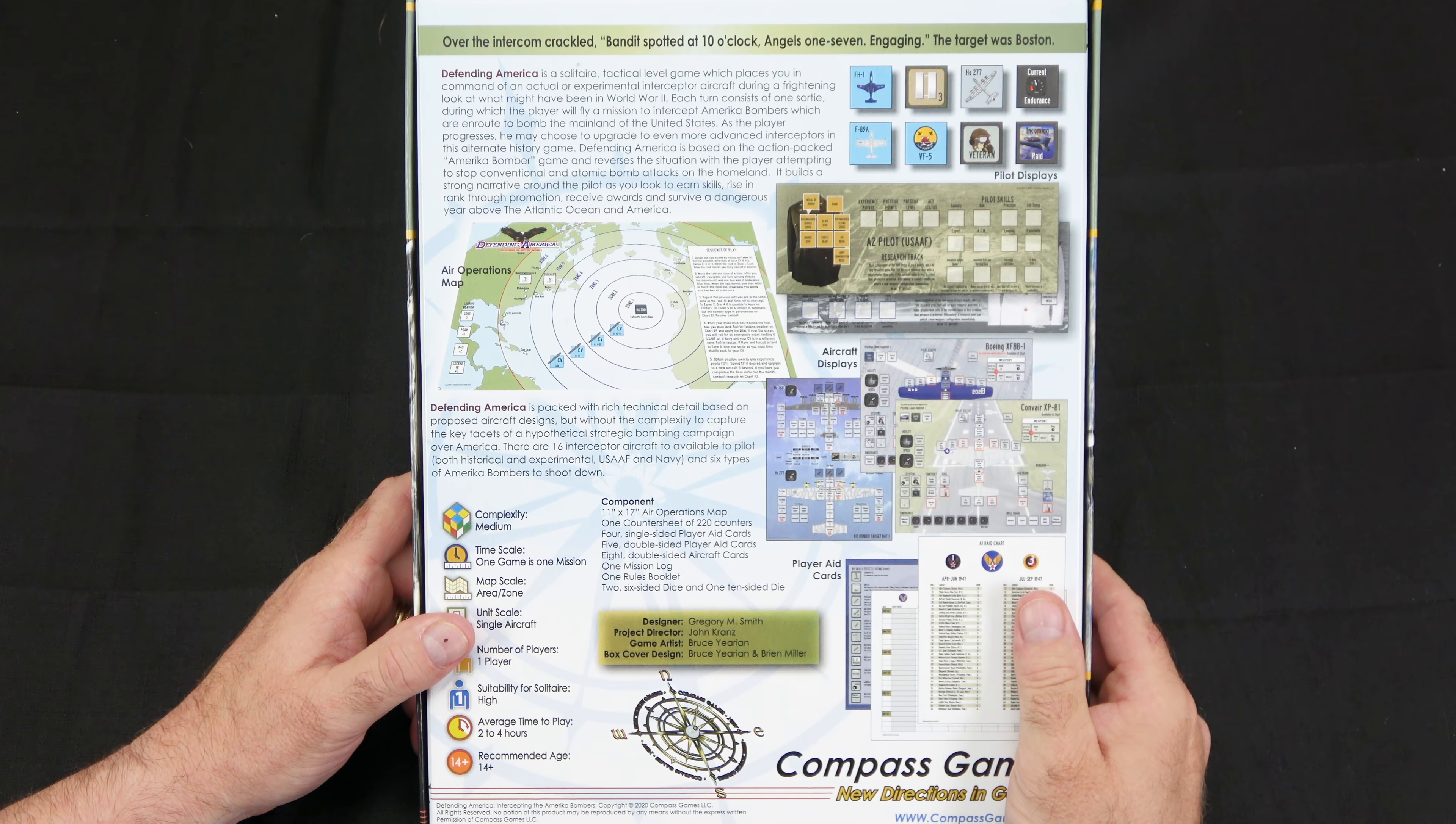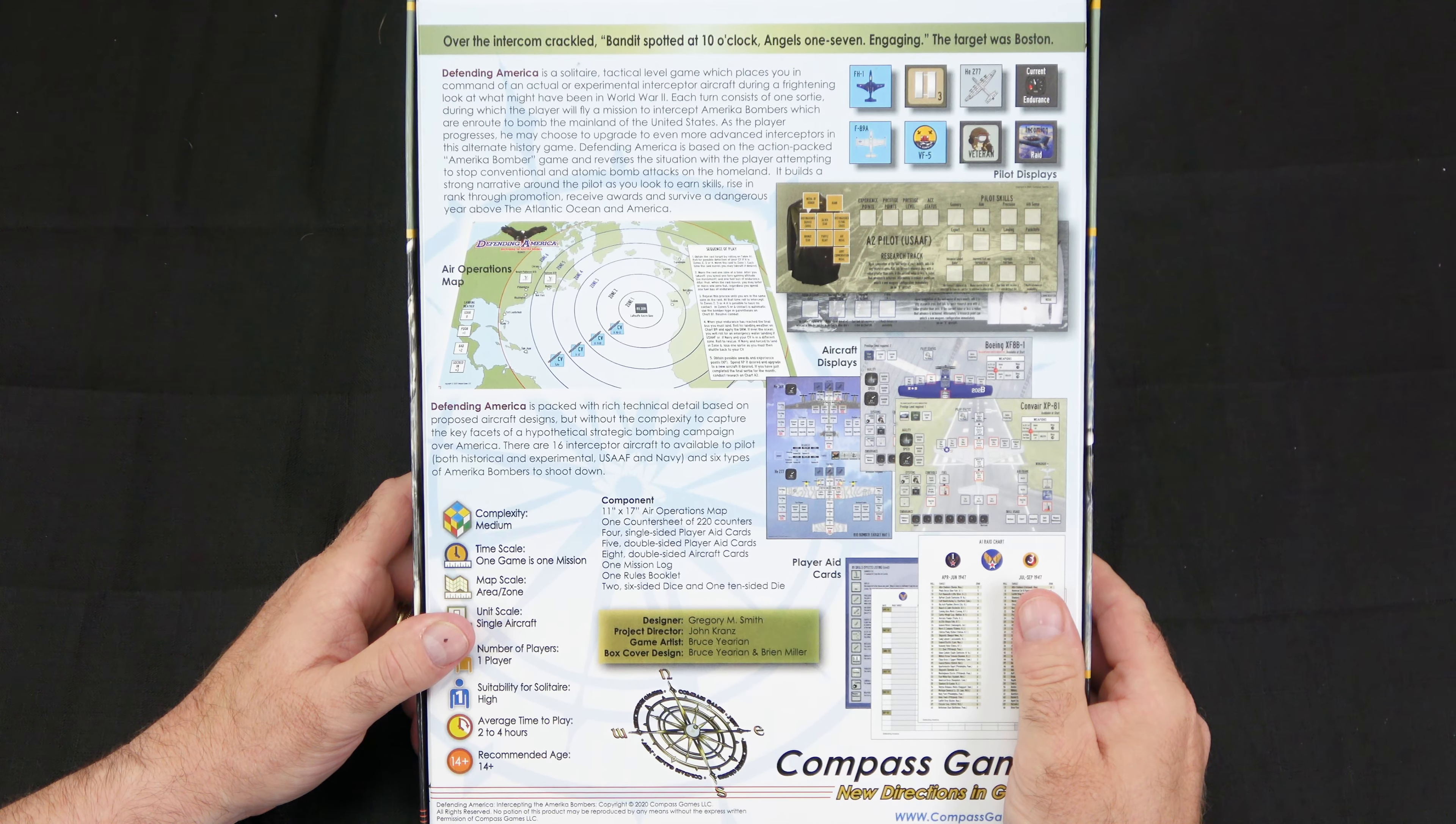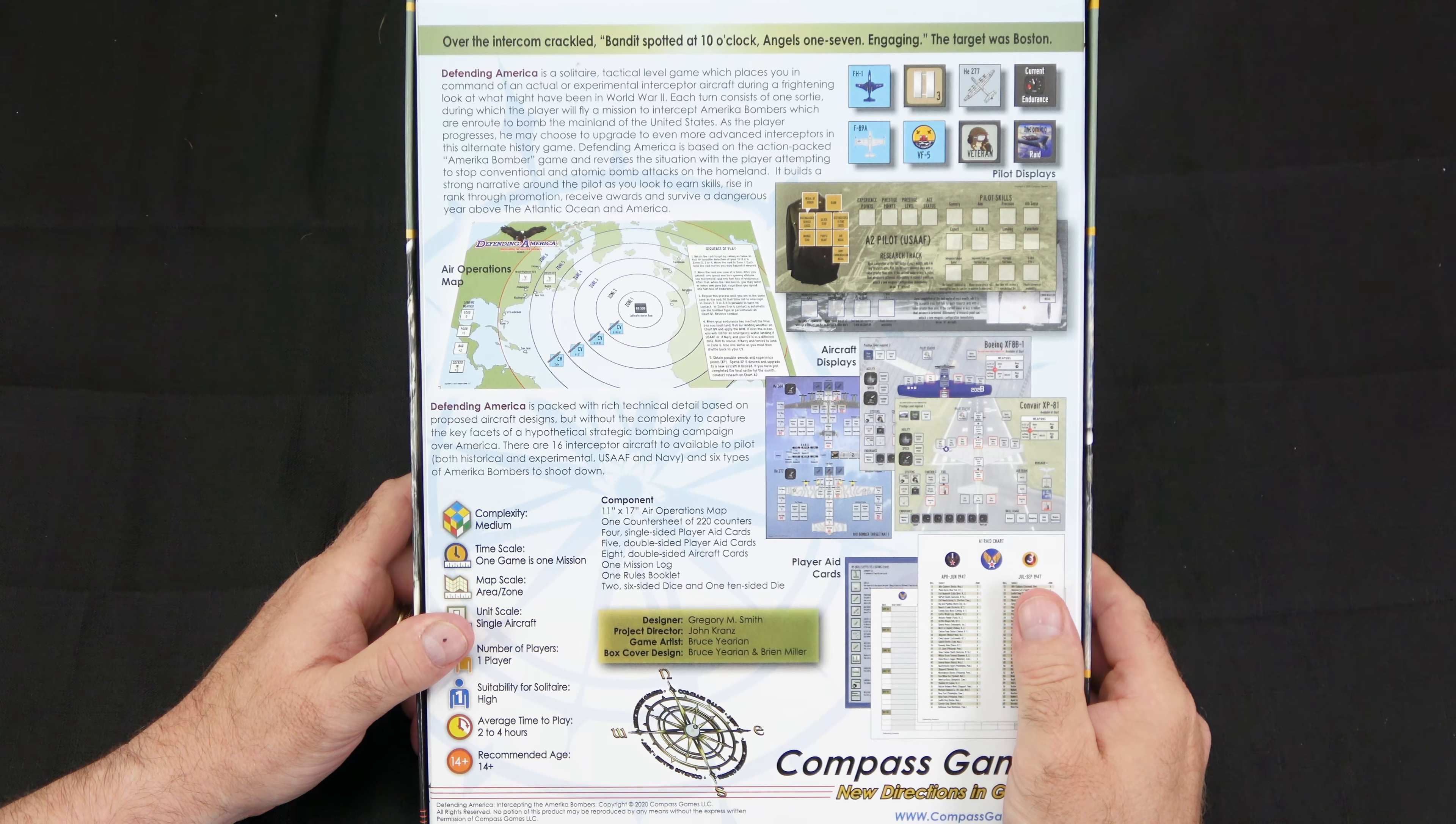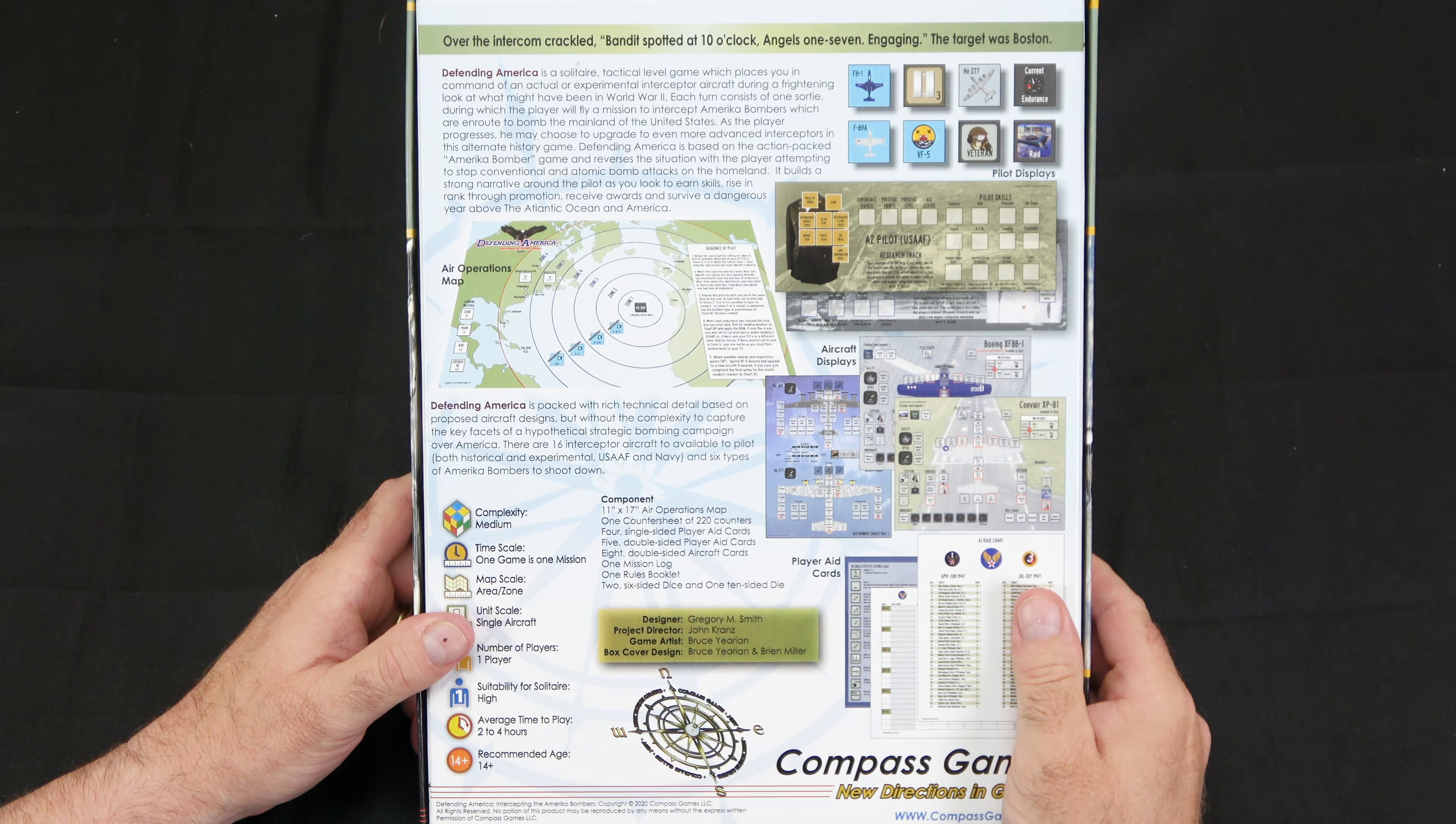Defending America is a solitaire tactical level game which places you in command of an actual or experimental interceptor aircraft during a frightening look at what might have been in World War II. Each turn consists of one sortie during which the player will fly a mission to intercept America Bombers which are en route to bomb the mainland of the United States. As the player progresses, he may choose to upgrade to even more advanced interceptors in this alternate history game. Defending America is based on the action-packed America Bomber game and reverses the situation with the player attempting to stop conventional and atomic bomb attacks on the homeland. It builds a strong narrative around the pilot as you look to earn skills, rise in rank through promotion, receive awards, and survive a dangerous year above the Atlantic Ocean and America.